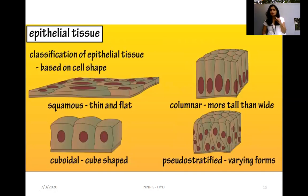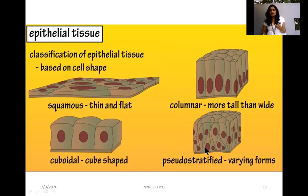Epithelial tissue is classified based on cell shape and number of cell layers. Based on cell shape, there are four types: squamous (thin and flat), cuboidal (cube-shaped with a round nucleus), columnar (taller with an oval nucleus, looking like a column), and pseudo-stratified — where pseudo means false, meaning it looks stratified but is not truly stratified.